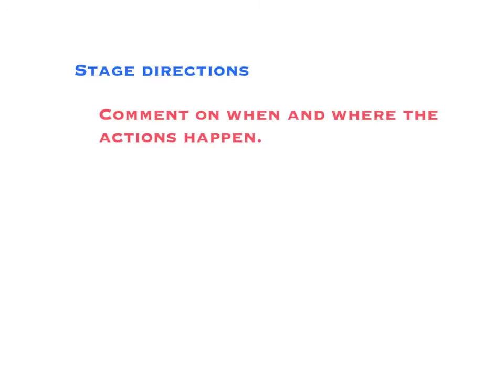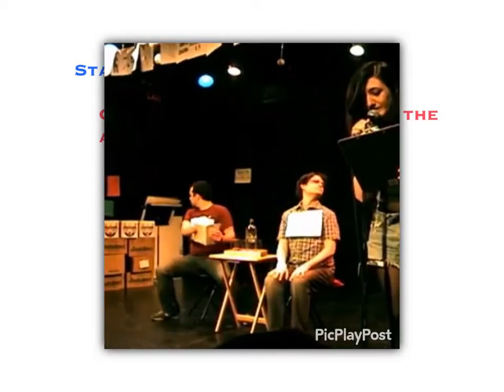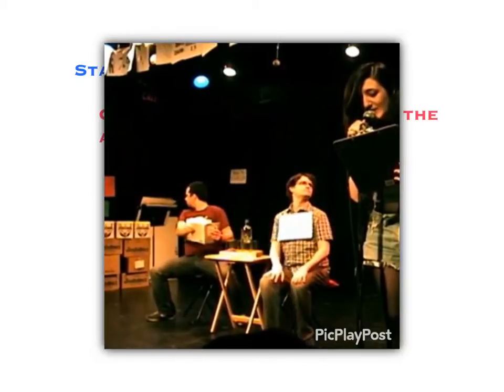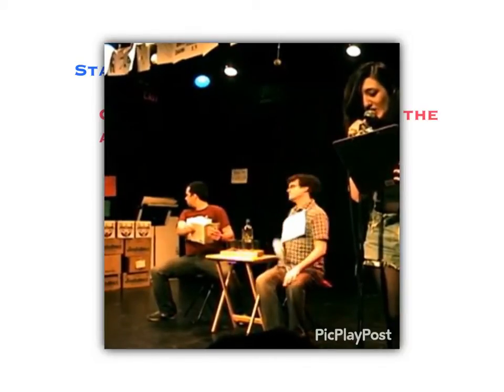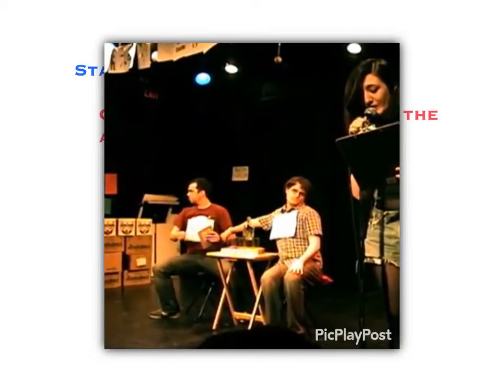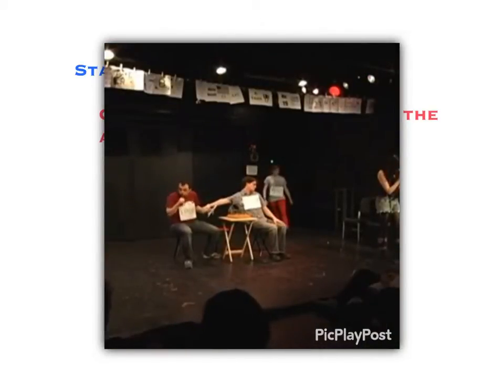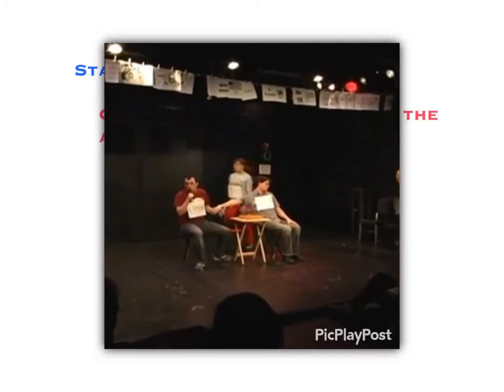Stage directions. Here is the definition. This next video will show a demonstration of stage directions. The brothers avoid looking at each other. Jamie leans over the table and gives his brother's arm an affectionate grasp. Edmund coughs nervously and this brings on a real fit of coughing. Mary enters, goes to Edmund and puts her arms around him. She kisses him.